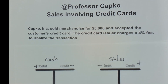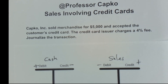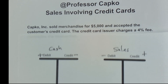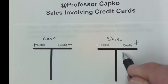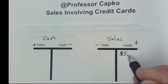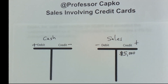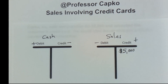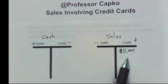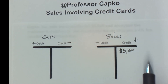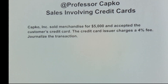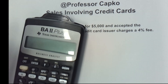So let's take a look at this transaction. The first thing we know is that we sold merchandise for $5,000, so we can go ahead and put that in our sales account. Since it's an increase in sales, I'm going to credit it for $5,000. Now we don't receive all $5,000 because there's a credit card fee involved, so let's figure out the amount of the credit card fee.